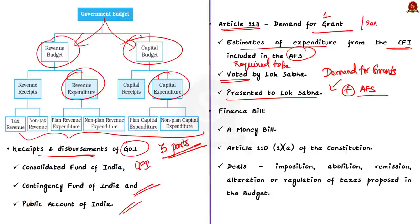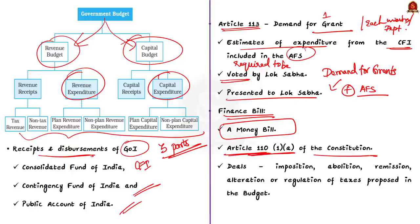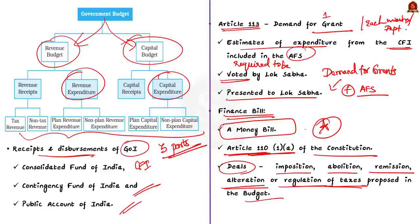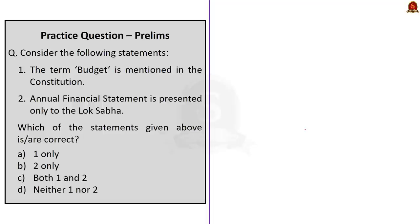Along with these, a financial bill is also presented. A financial bill is a money bill, presented in the fulfillment of the requirement of Article 110, Clause 1a of the Indian Constitution. This provision deals with the imposition, abolition, remission, alteration or regulation of taxes proposed in the budget. These are the basics you need to know about the budget, and an elaborate analysis will be followed up in next week's news analysis. With these key points in mind, let's move on to our prelims practice question and answer discussion.